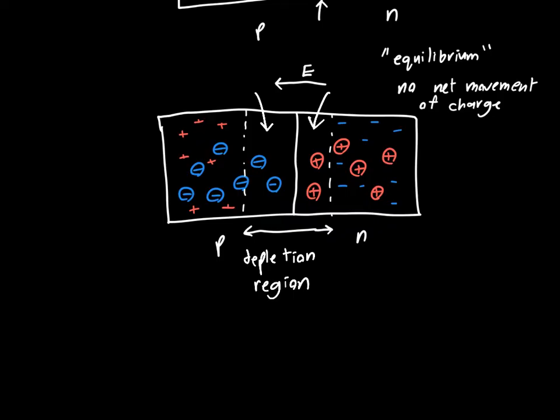So this picture—initially putting together two blocks of semiconductor material, having electrons diffuse to one side and holes diffuse to the other side, the buildup of this electric field, and then the creation of a depletion region—that's the whole picture of the formation of a p-n junction. If you understand that, then you understand completely how a p-n junction is formed.